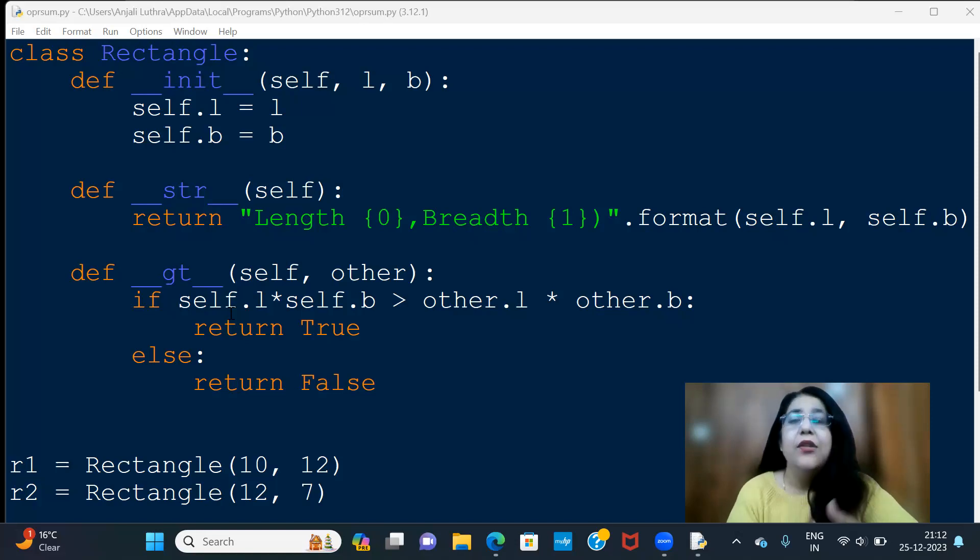So all those methods are already defined. That means already specified that the name is, what should happen, and you have to define it inside of it. Like here you can see I have made GT, meaning greater than.